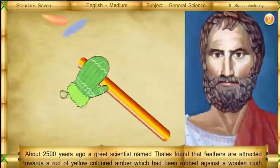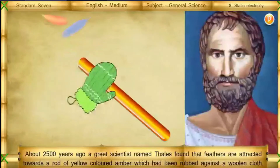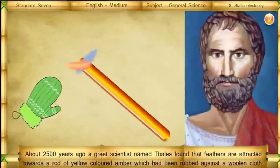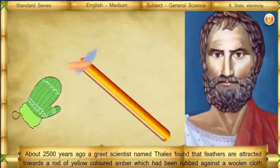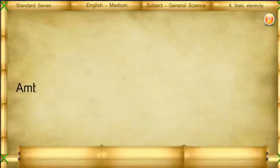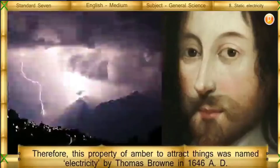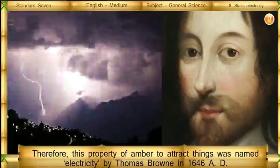About 2,500 years ago, a great scientist named Thales found that feathers are attracted towards a rod of yellow-colored amber which had been rubbed against a woolen cloth. Amber is called 'electron' in the Greek language. Therefore, this property of amber to attract things was named electricity by Thomas Browning in 1646 AD.